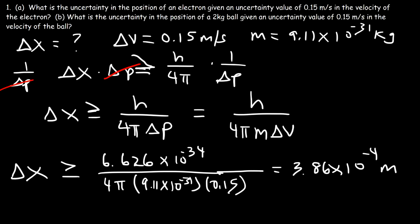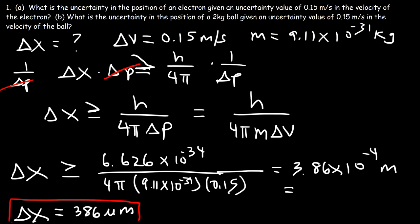The uncertainty in the particle's position is 3.86 times 10 to the negative 4 meters, which converts to 386 micrometers. That's the uncertainty in the position of the electron.